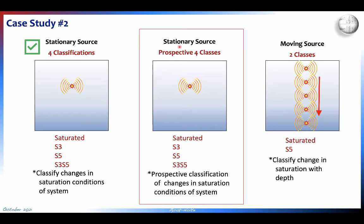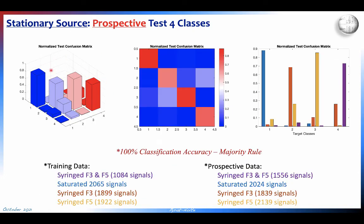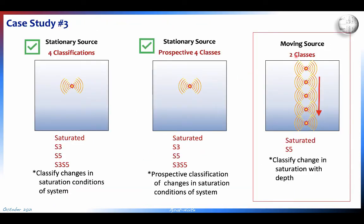Case study two uses a stationary source again but as a prospective four-class classifier: we train on one dataset for the four saturations, then completely cycle the sample's saturations, take a completely new dataset, and predict on that prospective set. We again get very good classification — the confusion matrix shows strong diagonal terms and very low off-diagonals. Some individual events are misclassified, but with majority rule we achieve perfect classification of the saturation state.